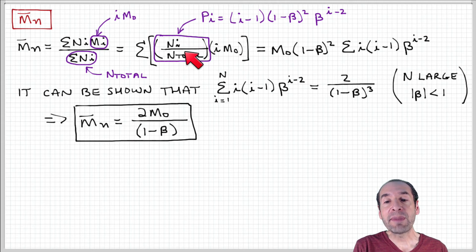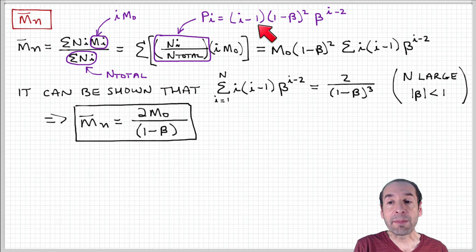Now this sum, n-i over n-total, remember that's the fraction of molecules that have a length i. And this is expressed by this probability that a chain is an i-mer, which we just obtained. p-i minus 1 times 1 minus beta squared times beta to the i minus 2.